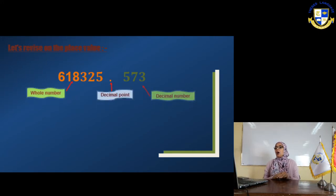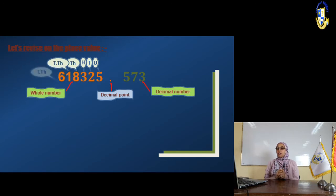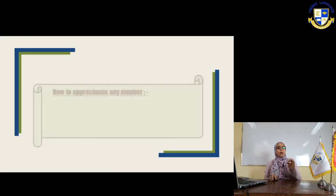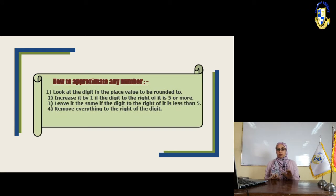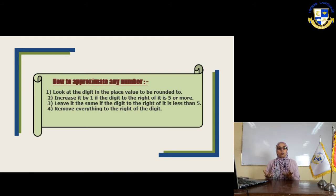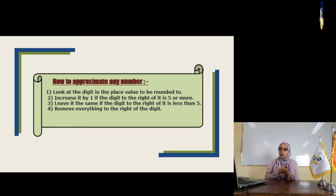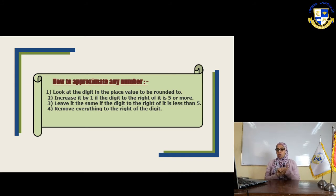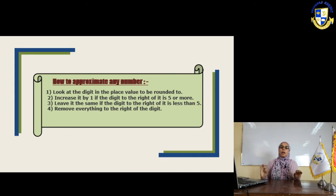How do we approximate any number? First, look at the digit in the place value you are rounding to. Then look to the right of it and see if that digit is weak or strong. If it's strong, increase the digit by one. If it's weak, leave the number as it is without any changes. Then remove everything to the right of that digit, or replace them by zero.